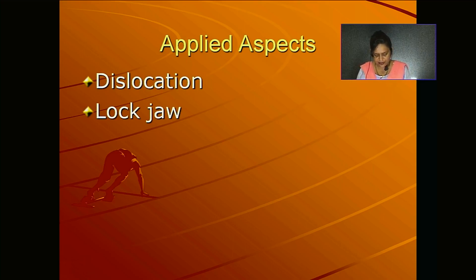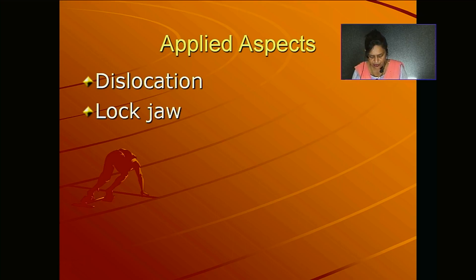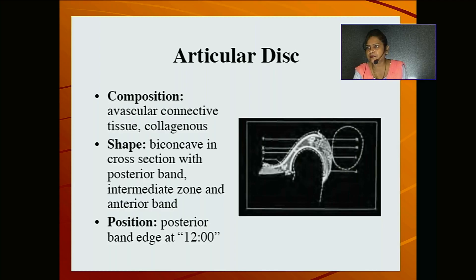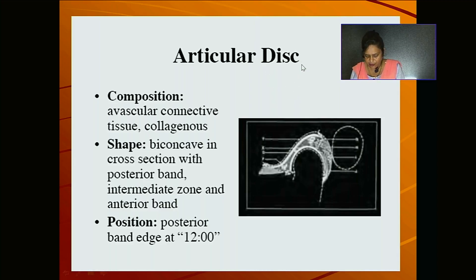The articular disc is an oval fibrous plate that divides the joint cavity into two compartments: the upper compartment permits gliding movement and the lower compartment permits rotatory movement. The disc has a concavo-convex superior surface, and its periphery is attached to the fibrous capsule. It is composed of an anterior extension with a thick band, intermediate zone, and posterior thick band, also called the bilaminar region.